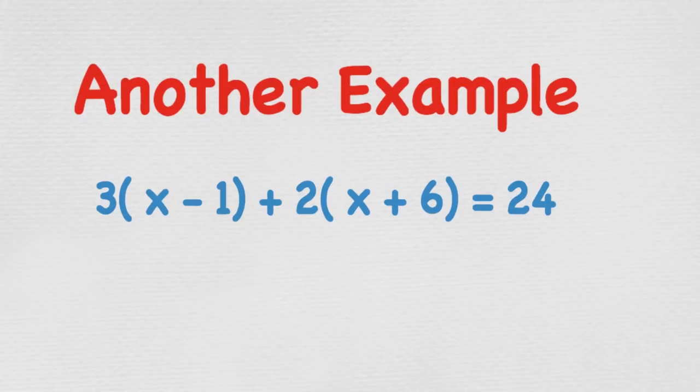So step one, expand. We need to expand the brackets so we can see only exactly what we are working with. Step two, collecting like terms. We need to collect everything that is the same to make the equation more simplistic. And step three, inverse operations. We need to isolate the x by itself to work out its value.